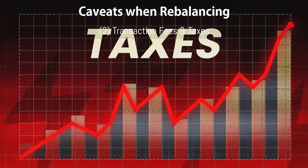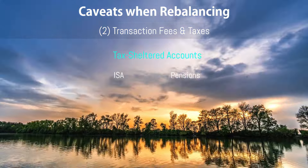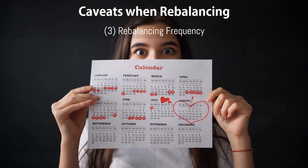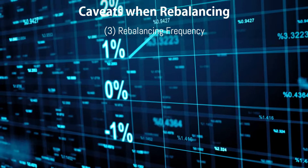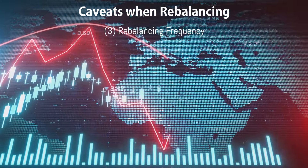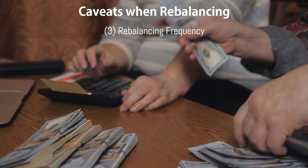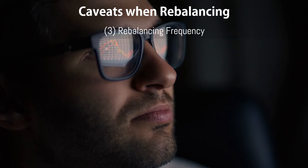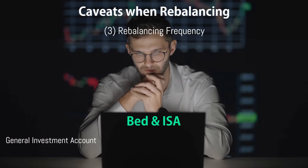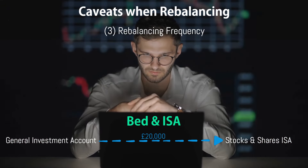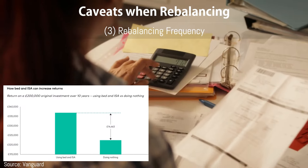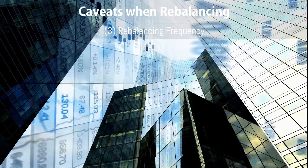Taxes can be more complicated. Using tax-sheltered accounts like ISAs or pensions can help shield your portfolio gains from capital gains tax. Third, if you rebalance too frequently — say monthly or quarterly — this can have an impact on returns. This is further compounded when using non-tax-sheltered accounts such as general investment accounts. For these accounts, you might want to use capital losses to offset capital gains, and also consider using new contributions to rebalance instead. Employing strategies like Bed and ISA can help manage tax liabilities — this involves moving assets from your general investment account into a stocks and shares ISA up to the annual ISA allowance of £20,000. Repeating this process annually can help you maximize your ISA allowance and minimize capital gains tax.